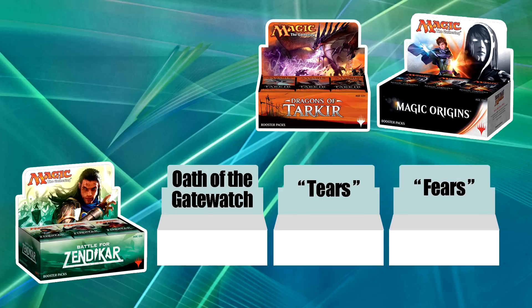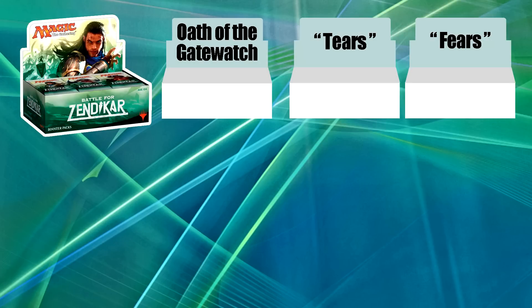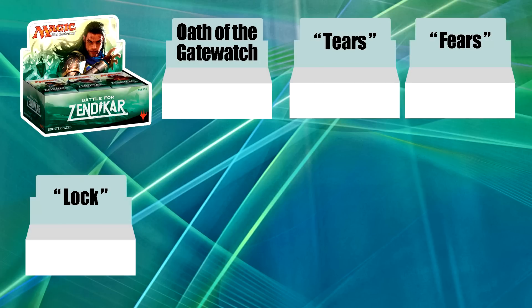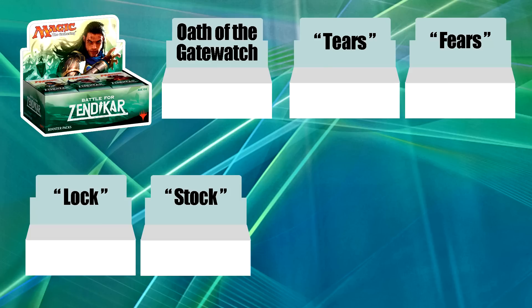From there, codenamed Fears comes in, which doesn't actually have a set name, and nothing is going to change from there. The next set that comes out after codenamed Fears is codenamed Lock. So at this point, this is where we have another rotation that's actually going to occur. At this point we have Battle for Zendikar, Oath of the Gatewatch, Tears, Fears, and Lock. And following Codename Lock comes Codename Stock for Magic sets.